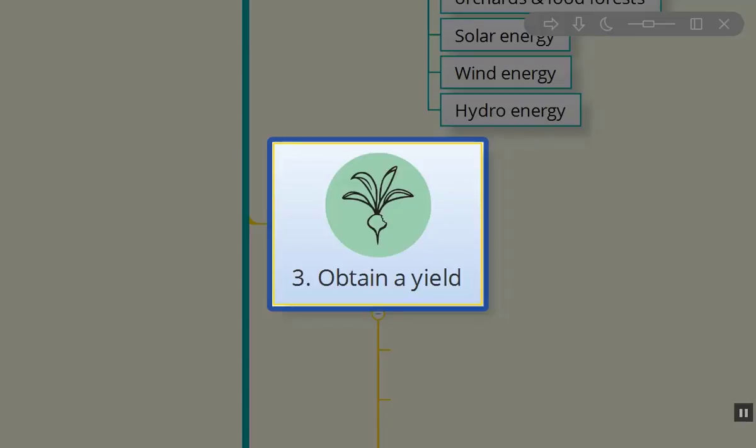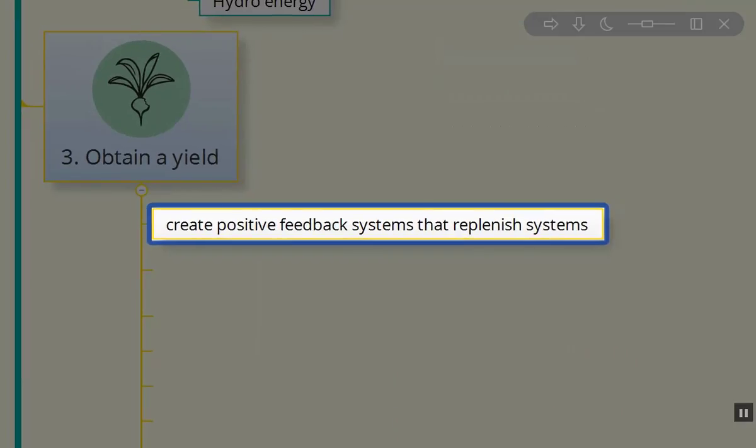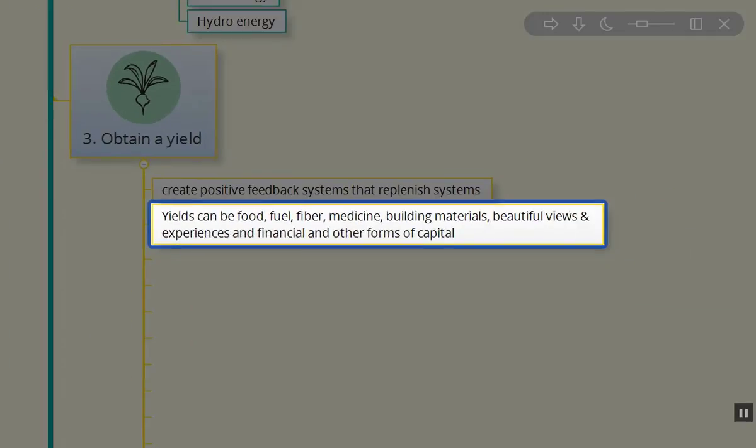Obtaining a yield, the third permaculture principle. What are we going to get out of our efforts? Well, we have to be really creative and utilize the feedback systems on site and replenish those systems. Keep the flow of energy going on the property, not letting any of the energies flow off-site if at all possible. Yields can be food, fuel, fiber, medicine, building materials. Beautiful views and experiences are a great yield as well. Certainly, financial rewards or social rewards and cultural rewards, forms of capital.